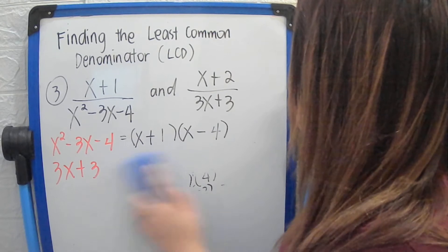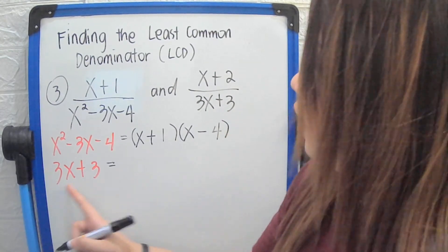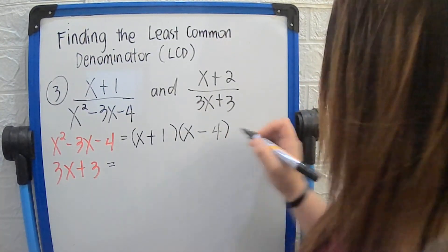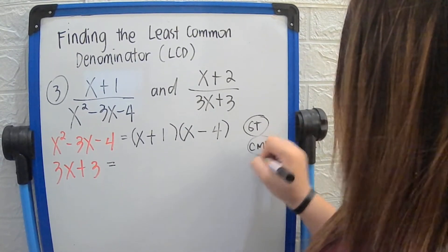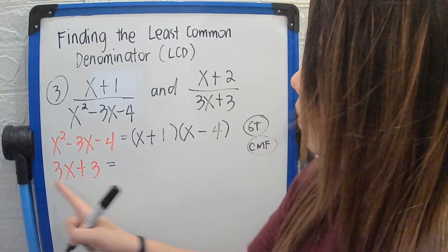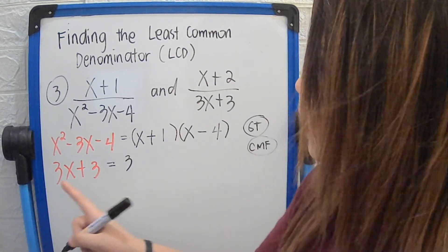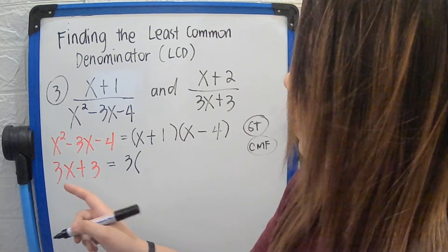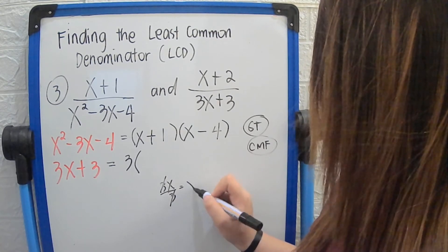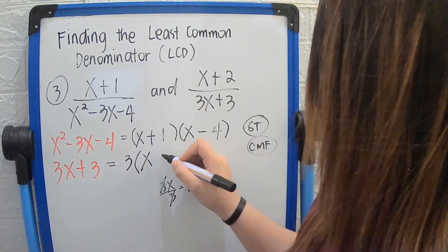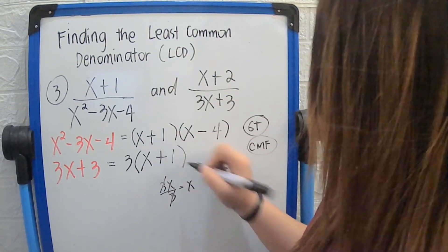For the second denominator, 3x plus 3, we use CMF — common monomial factor — because there is a common factor in each term. The common factor is 3. Dividing 3x by 3 gives x, and 3 divided by 3 gives 1, so 3x plus 3 factors as 3(x plus 1).